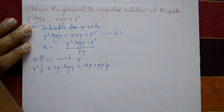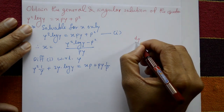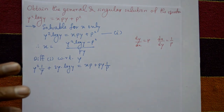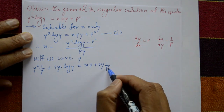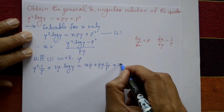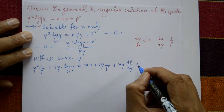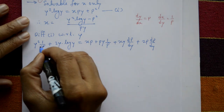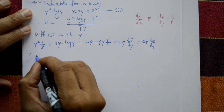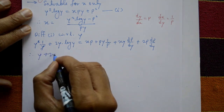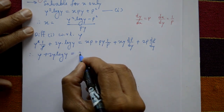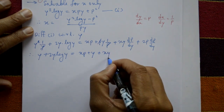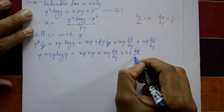Differentiating x with respect to y gives dx/dy = 1/p, since dy/dx = p implies dx/dy = 1/p. Differentiating the p² term: differentiate p with respect to y gives dp/dy. After applying all product rules, terms simplify: y + 2y log(y) = xp · (1/p) + y + xy · (dp/dy) + 2p · (dp/dy).